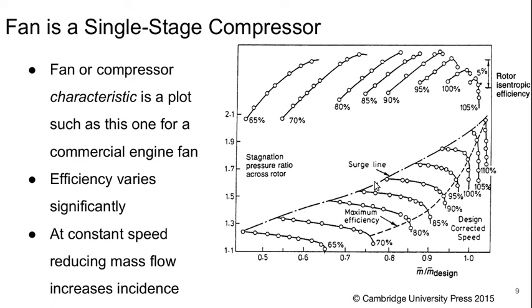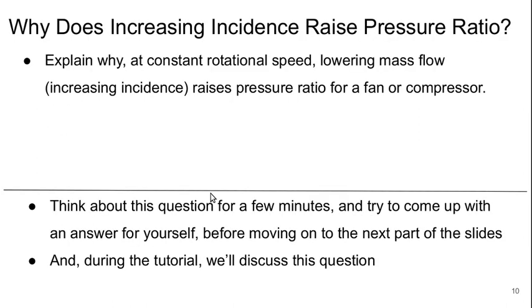And at constant speed, constant rotational speed, if we reduce the mass flow, we see the pressure rise goes up. And this is because we're increasing incidence.